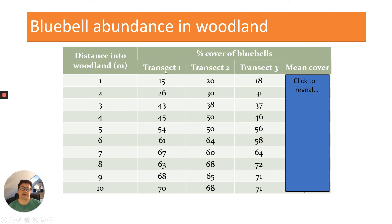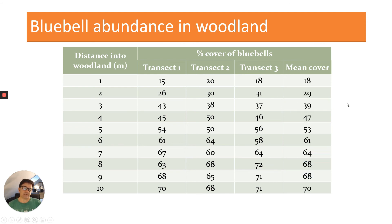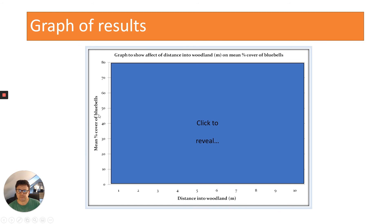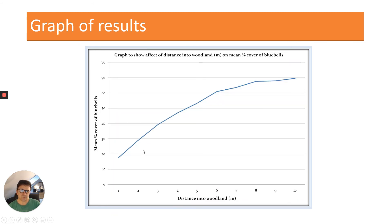You wouldn't do just one transect — you'd do at least three, so you can find a mean percentage cover for each distance into the woodland. Results show that as the distance increases, the percentage cover of bluebells increases up to around eight metres, then plateaus. You then draw a graph with distance into woodland on the x-axis and mean percentage cover of bluebells on the y-axis.